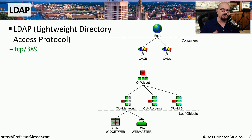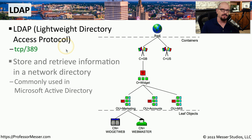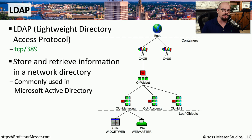We use directories extensively on modern networks, and one very common protocol to query these directories is LDAP, the Lightweight Directory Access Protocol. LDAP commonly uses TCP port 389. There are many implementations of LDAP, but one of the most popular is Microsoft Active Directory, which allows you to query the Active Directory server using the LDAP protocol.